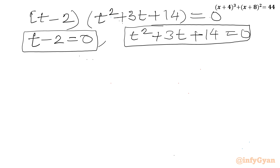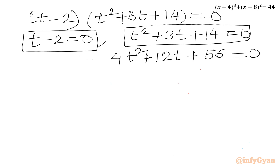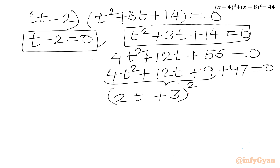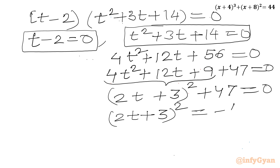Let us consider the quadratic first. We multiply the equation t² + 3t + 14 = 0 by 4, giving 4t² + 12t + 56 = 0. We rewrite this as (2t + 3)² + 47 = 0, so (2t + 3)² = −47.